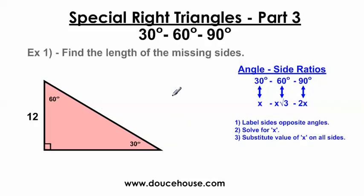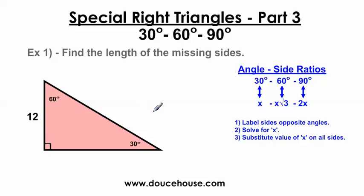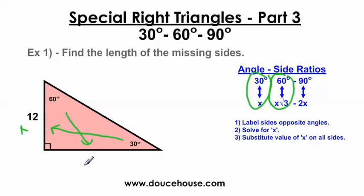Now we're going to move on to some problems. It says find the length of the missing sides. Which side are we given? We're given the side opposite the 30 — this is the short leg. We need to find the long leg and the hypotenuse. I like to solve these problems using steps. Step 1: label sides opposite the angles. So opposite the 30-degree angle I'm going to label x, opposite the 60-degree angle I'm going to label x square root 3, and opposite the 90-degree angle I'm going to label 2x.